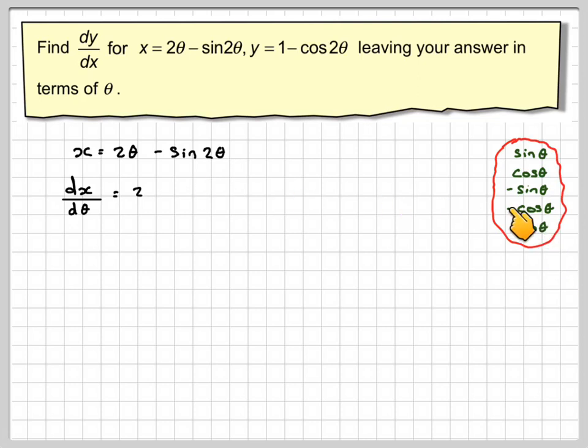So we've got minus sine, so it becomes minus cos, and then because there's a 2 here, it becomes minus 2 cos 2 theta.